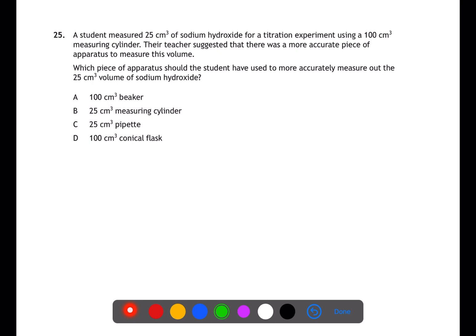Question 25 is testing your knowledge of chemical apparatus. When measuring out volumes for a titration, you need to use the most accurate equipment possible. The scales on beakers and conical flasks are not accurate. A measuring cylinder is more accurate, but a pipette of 25 milliliters will measure out only 25 milliliters and is therefore the most accurate.